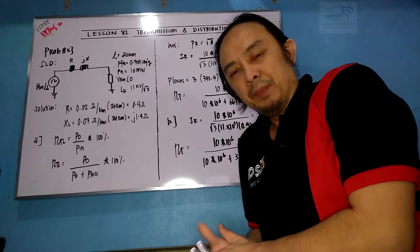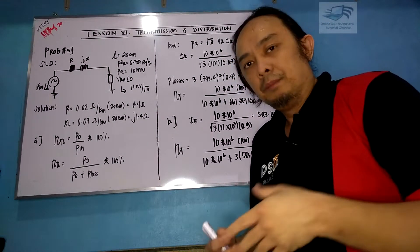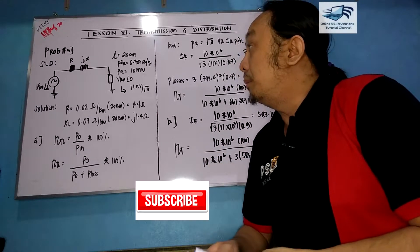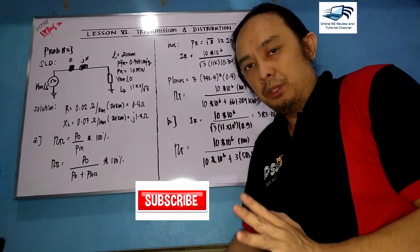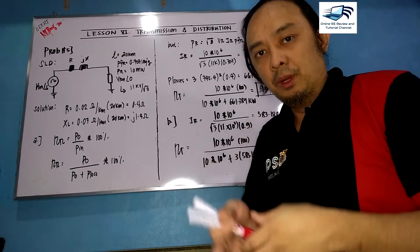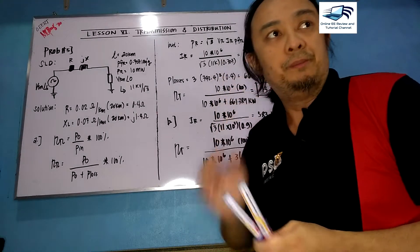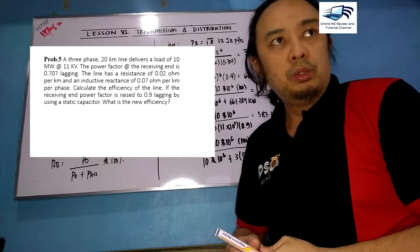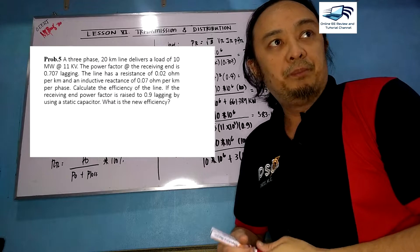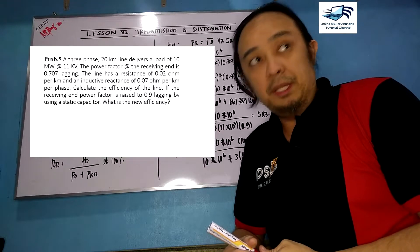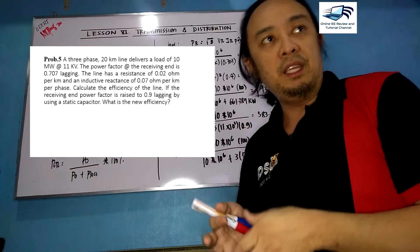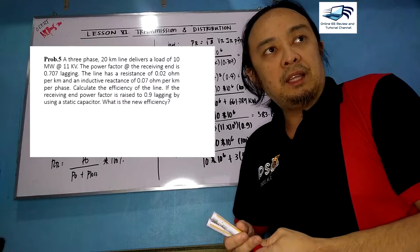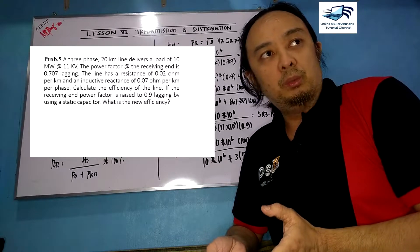Hello once again. We are on lesson number six, transmission and distribution, continuing with problem number five. A three-phase 20-kilometer line delivers a load of 10 megawatts at 11 kV. The power factor at the receiving end is 0.707 lagging. The line resistance is 0.02 ohms per kilometer and the inductive reactance is 0.7 ohms per kilometer per phase.